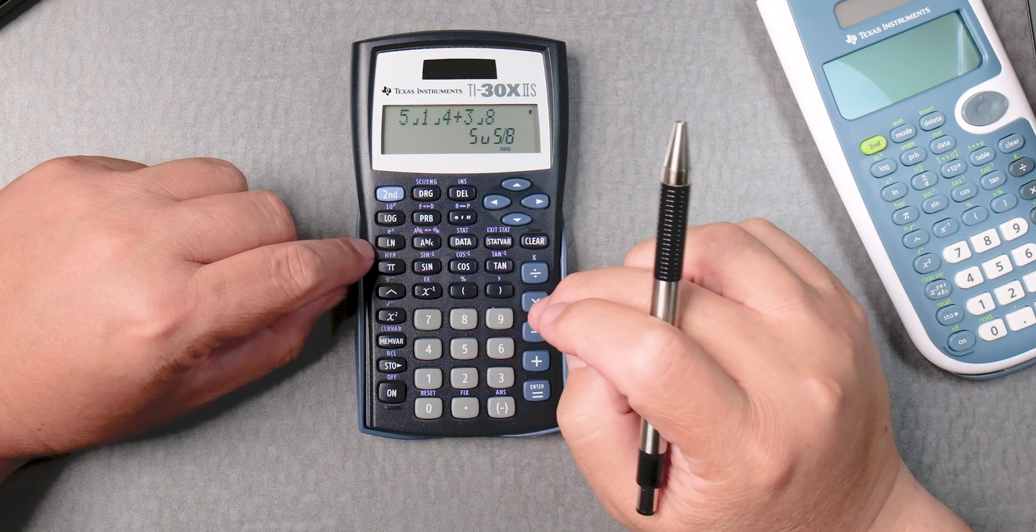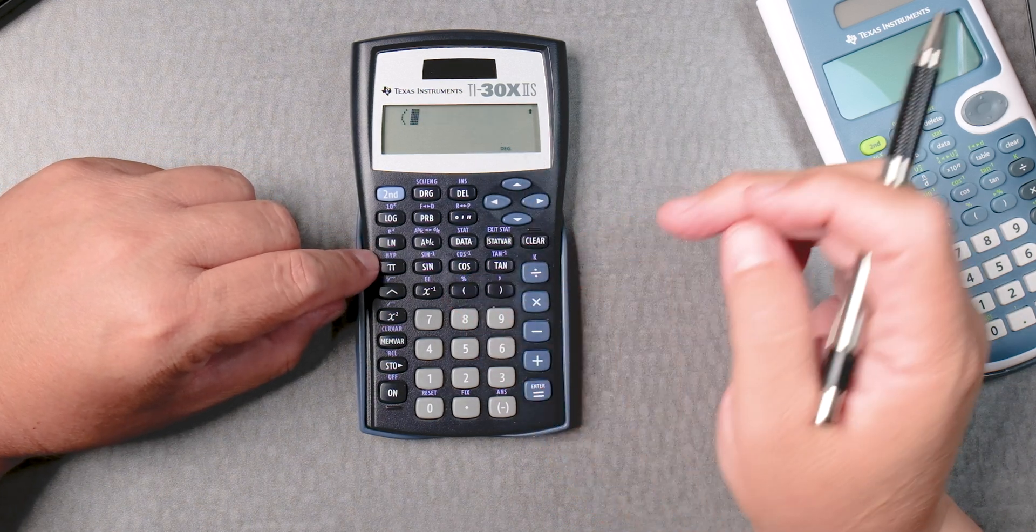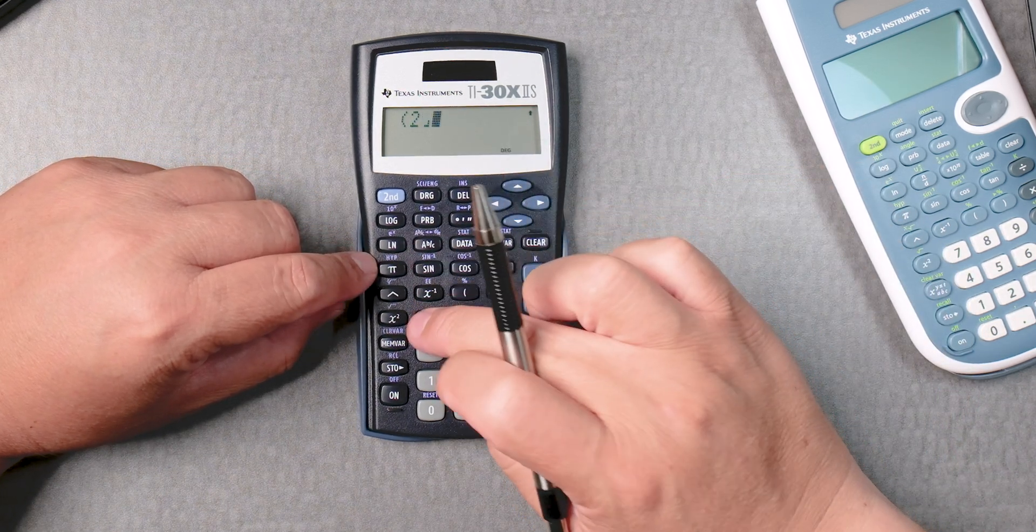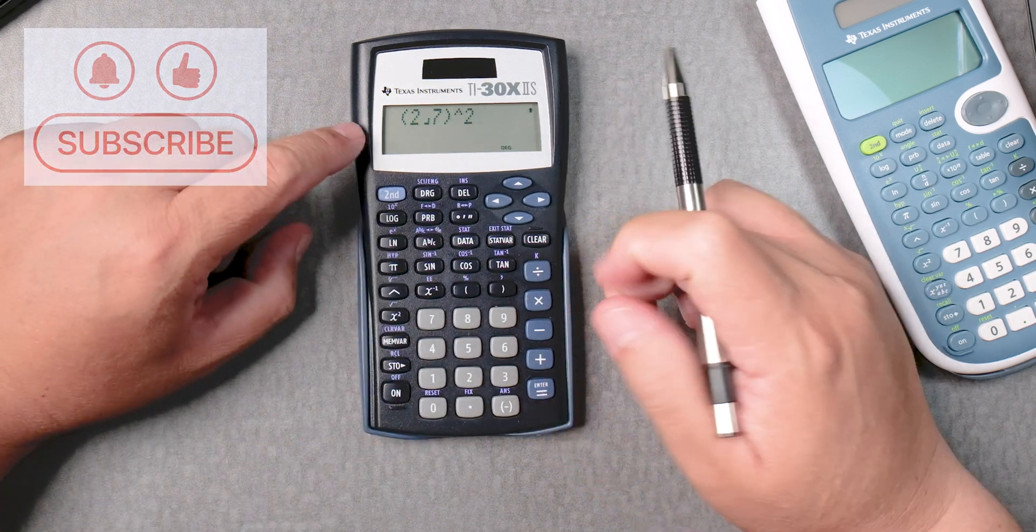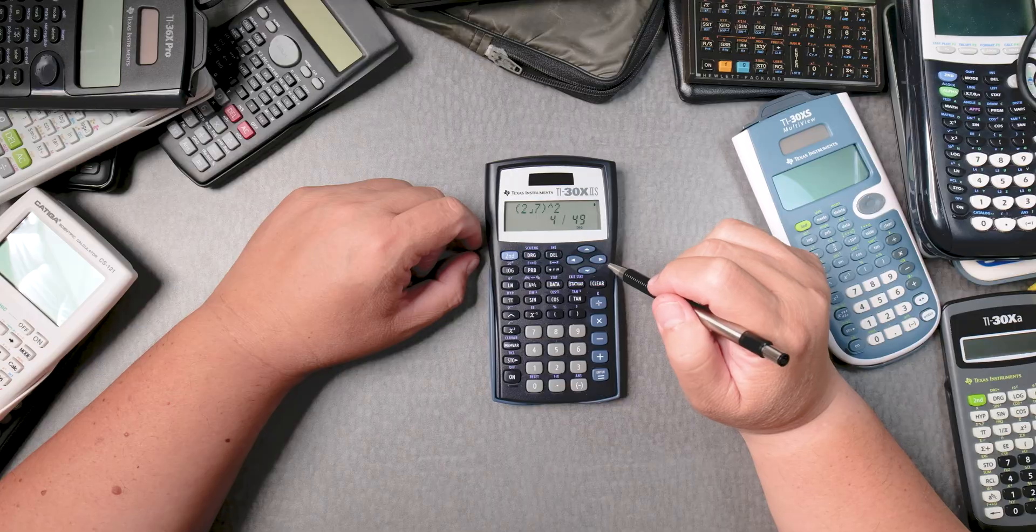You can take something like parenthesis, let's say 2 ABC 7, close parenthesis and use the caret key to square. It will do those operations, it does everything, multiply, divide.